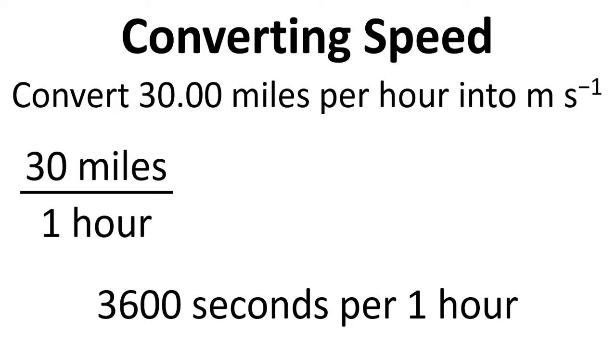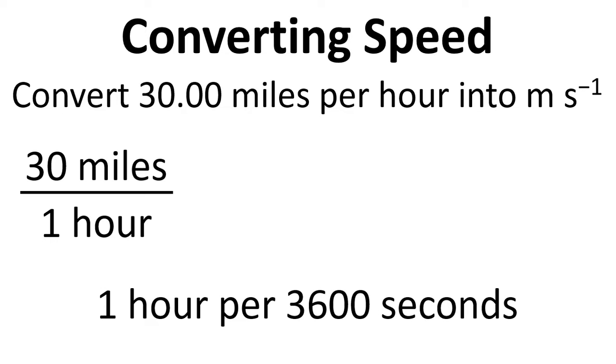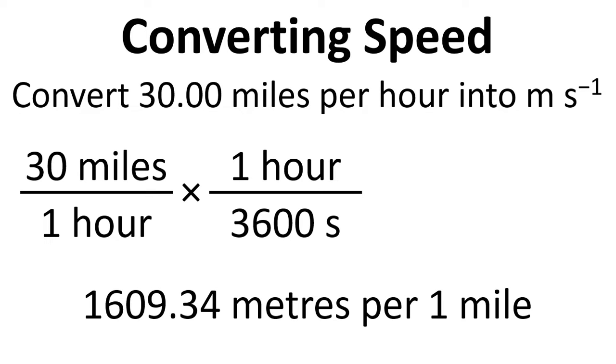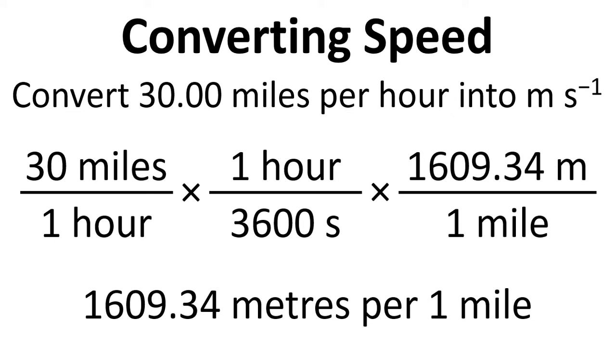We write that there's 3600 seconds per hour, or one hour per 3600 seconds. So we multiply by one hour divided by 3600 seconds. We also know that there's 1609.34 meters per mile, so we multiply by that.